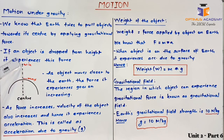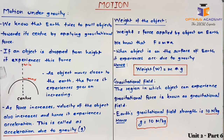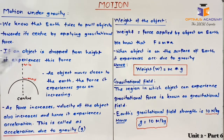Between these two points, speed of the object continuously increases. We have learnt that change in speed per unit time is known as acceleration. Here, due to the gravitational force, speed of the object changes and the object experiences acceleration. Since this acceleration is due to the gravitational force experienced by the object, we call it acceleration due to gravity. Force increases, so velocity of the object also increases, and hence it experiences acceleration. This acceleration is known as acceleration due to gravity and is indicated by the letter g.